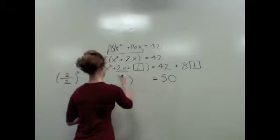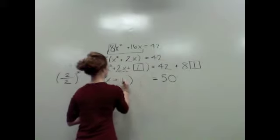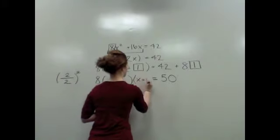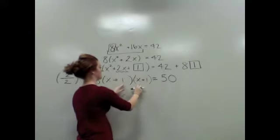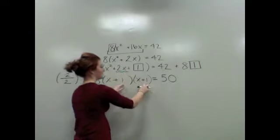So essentially what our factors would look like is (x + 1) times (x + 1). x times x is x². x times 1, another 1 times x, that's 2x. And 1 times 1 is 1.